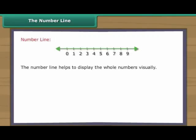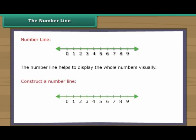The number line. The number line helps to display the whole numbers visually. To construct a number line, we simply draw a straight line and choose any point on the line and label it zero. This point is called the origin.